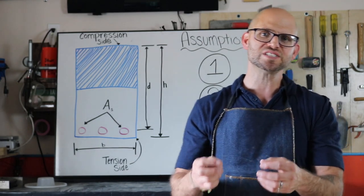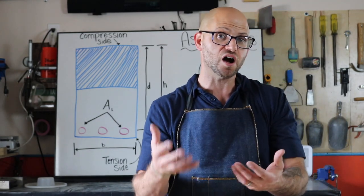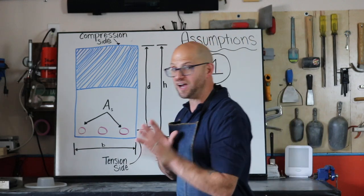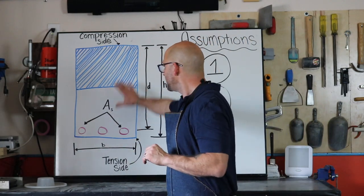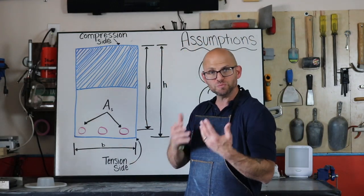And the reason why we say that the steel and the concrete are one is because we have to assume that they are acting as a true composite material.